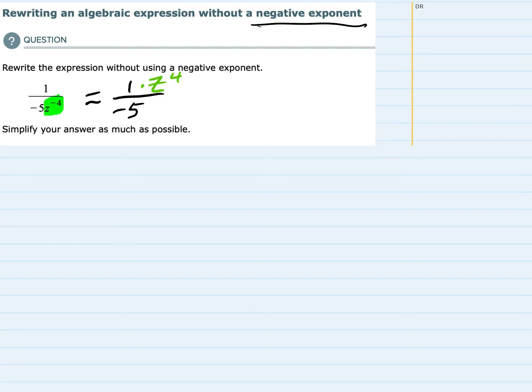So we have gotten rid of our negative exponent. We just need to simplify this as much as possible. So in the numerator, 1 times z to the fourth is just going to be z to the fourth. And in the denominator, we can leave that just a negative 5.